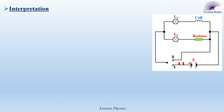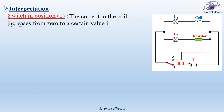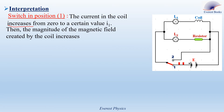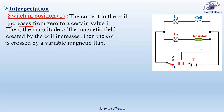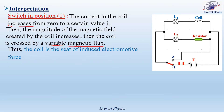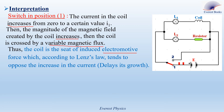Interpretation: In the experimental animation, we observe that L1 glows and dies out with a certain delay. The question is: what happens in the coil that leads to this delay? When the switch is in position 1, the current in the coil increases from zero to a certain value I1. A current in a coil creates a magnetic field, so the magnitude of the magnetic field increases. Then the coil is crossed by a variable magnetic flux, and a variable magnetic flux leads to an induced electromotive force E in the coil. According to Lenz's law, the induced EMF tends to oppose the increase in the current.